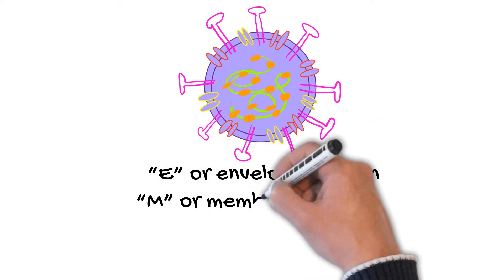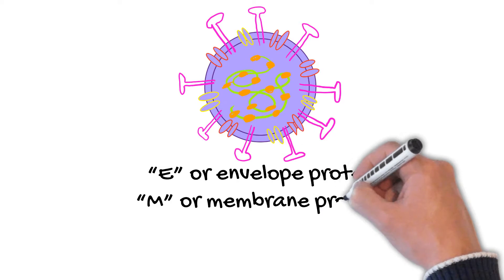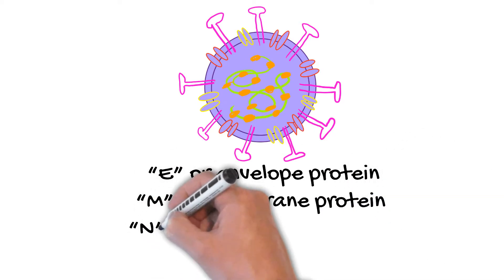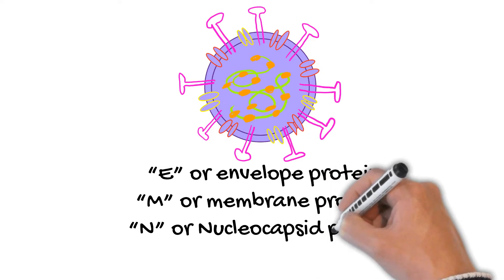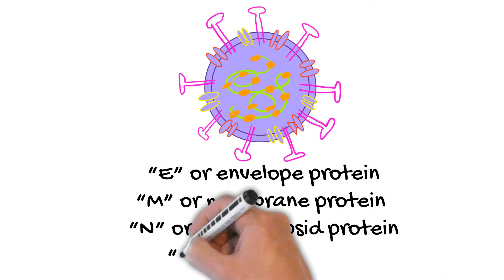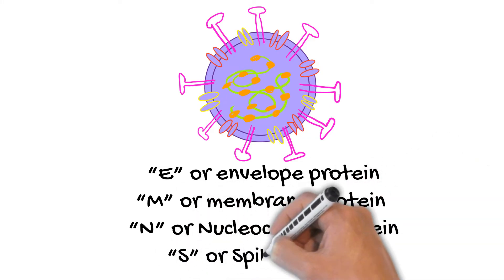There's the E protein, or the envelope protein, the M, or membrane protein, the N, or nucleocapsid protein, and then finally, what's the big one? That's right, the spike protein, or the S protein.